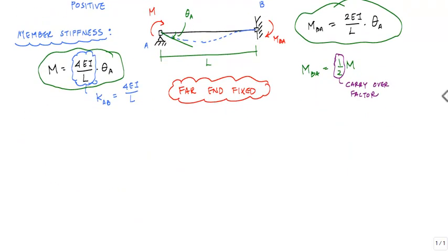Now, if you had a case where the far end were pinned, so if I had this joint here, pin and pinned, and I had this moment M applied here, my deflected shape might look something like this, call this theta A.